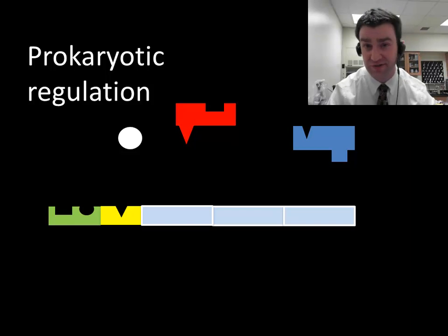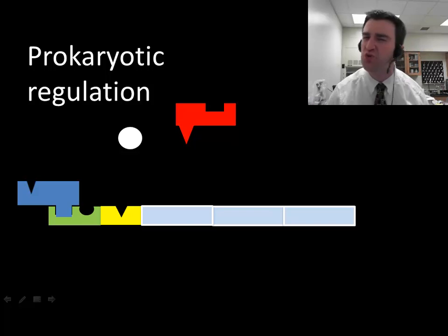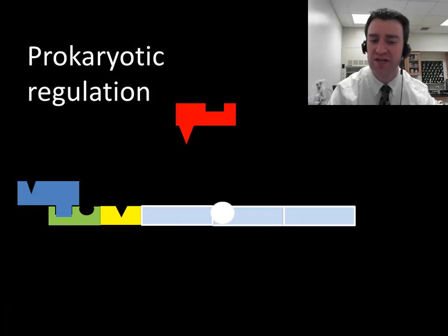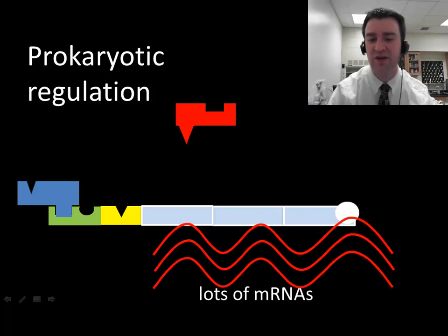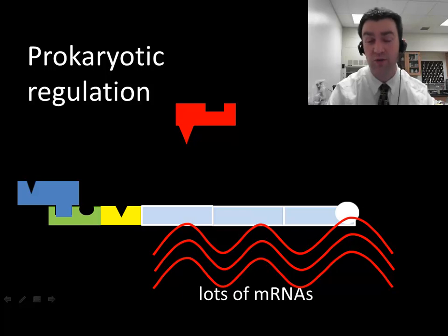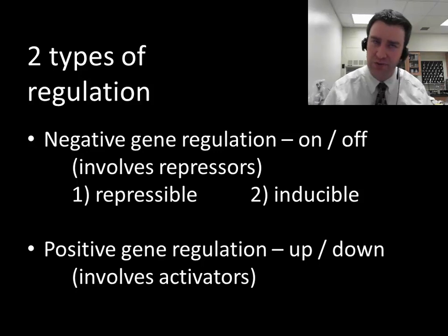As it turns out, activator transcription factors bind at the promoter region. What activators can do is somehow recruit RNA polymerases to come more often, so they have an easier time binding to the promoter region. They'll transcribe the gene more often and you'll get more mRNAs produced than you would without the activator being there. Activators encourage transcription; repressors block transcription. Now we want to apply those concepts to real world contexts and talk about real prokaryotic genes.